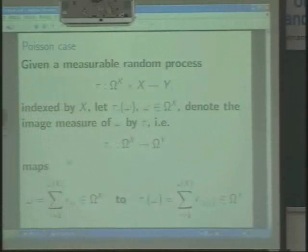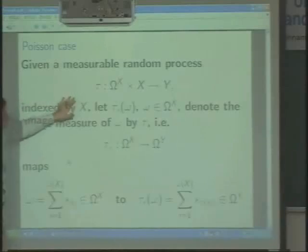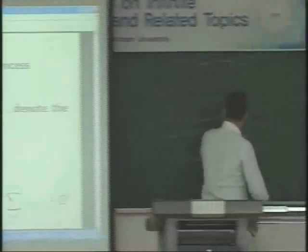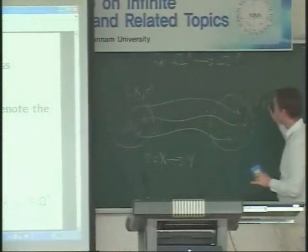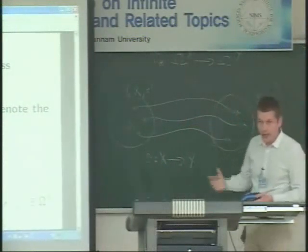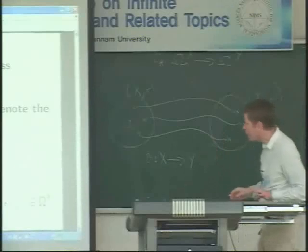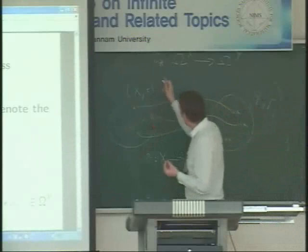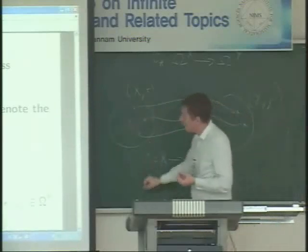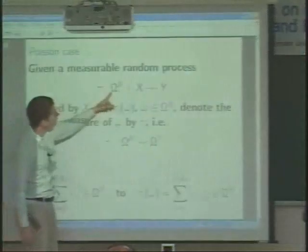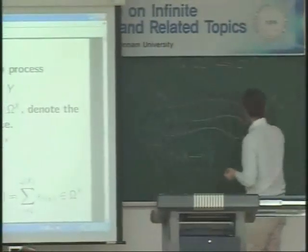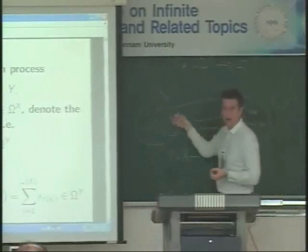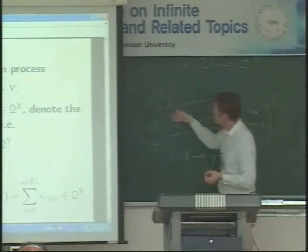The answer is well known in the deterministic case — a very classical result in analysis of Poisson measures. As long as tau is a fixed transformation mapping X to Y such that tau maps sigma to mu, then tau-star maps the Poisson distribution on X to the Poisson distribution on Y with intensity mu. The question I want to raise is what happens in the random case, when tau is no longer fixed — that means when tau also depends on the configuration points, so the way a point is sent may depend on the positions of neighbors. We have interactions.